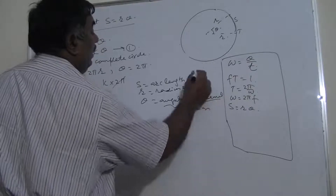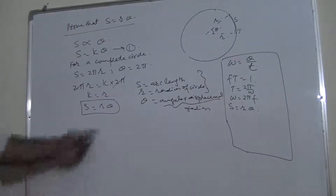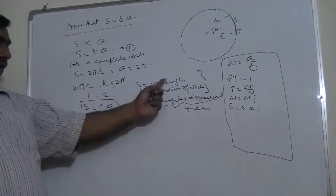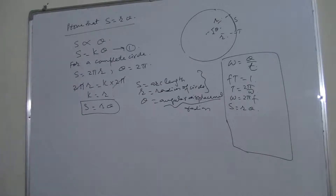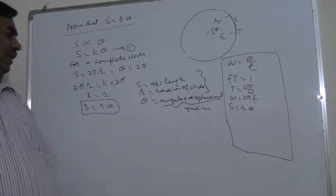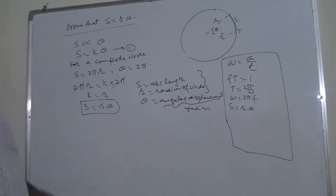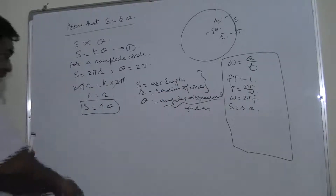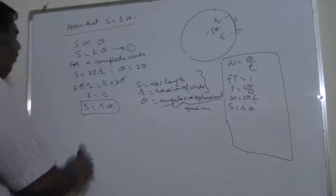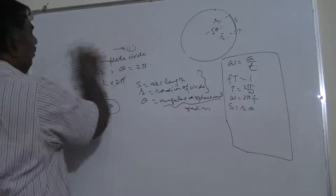Important conditions: the angular displacement theta must be in radians for this formula. Also, s and r must be in the same units — if arc length is in centimeters then radius is also in centimeters, and if radius is in meters then arc length is also in meters.